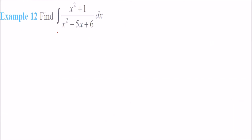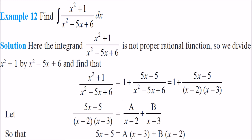Now consider the next example. This is not a proper rational function because the degrees of numerator and denominator are the same. So we must first divide properly. Dividing x²+1 by x²−5x+6, we get 1 plus (5x−5)/(x²−5x+6).